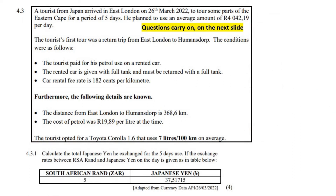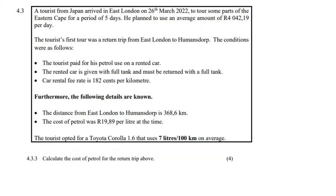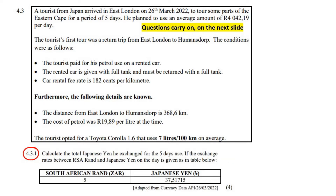This question will be broken up into parts — this will be the first question we look at, then there's a second question and a third question. A tourist from Japan arrives in East London on 26 March 2022 to tour some of the parts of the Eastern Cape for five days. He plans to use an average of 4042 rand and 19 cents per day.